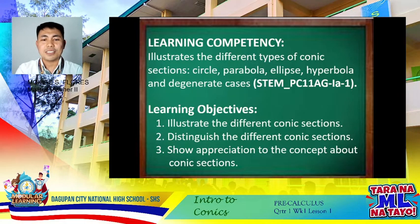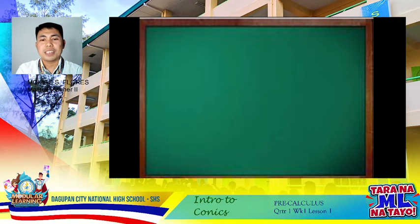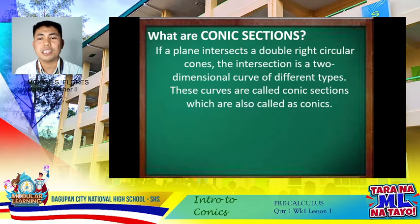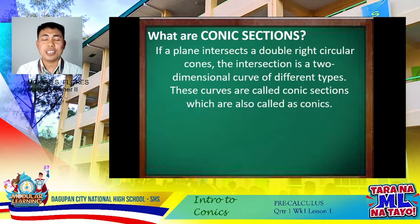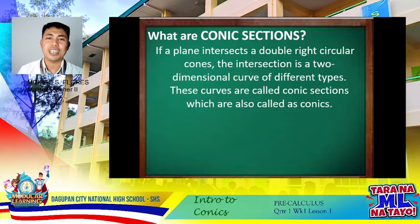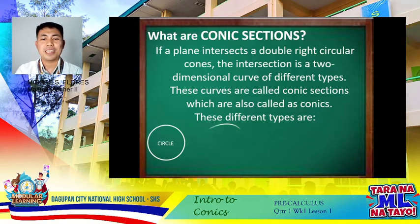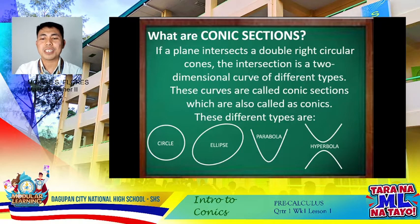Now let us have our definition of conic sections. We have conic sections when a plane intersects a double right circular cone. The intersection is a two-dimensional curve of different types. These curves are called conic sections, or in some other textbooks, conics for short. The different types of conics are circles, ellipses, parabolas, and hyperbolas.